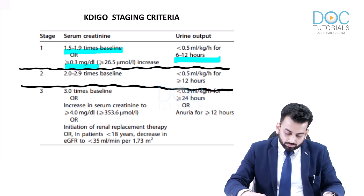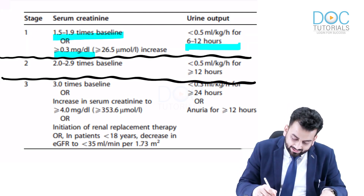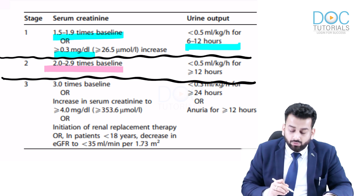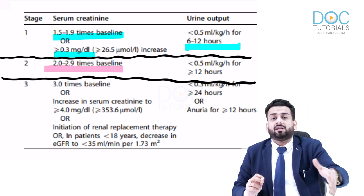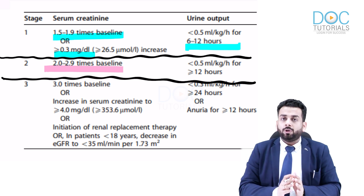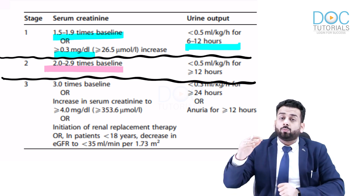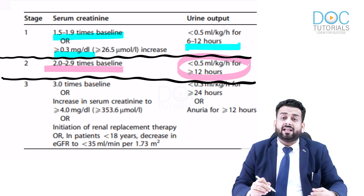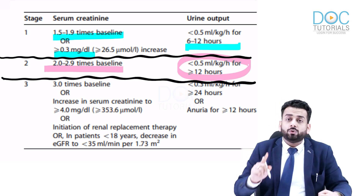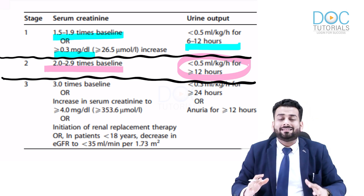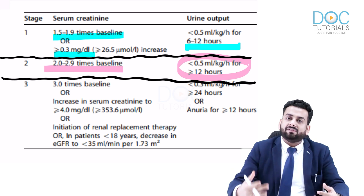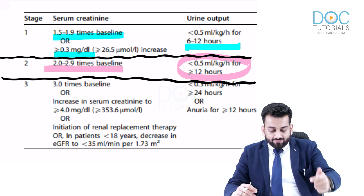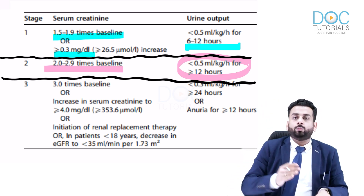Stage 2 KDIGO: creatinine becomes 2 to 2.9 times the baseline, or urine output less than 0.5 ml/kg/hour for more than twelve hours. This is an escalation from Stage 1 — previously 1.5 to 1.9 times the baseline and less than 0.5 ml/kg/hour for six to twelve hours, now 2 to 2.9 times baseline with oliguria persisting beyond twelve hours.